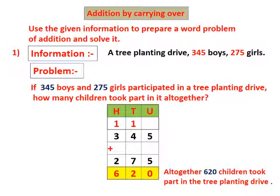Now we add the tens: 4 tens plus 7 tens plus 1 ten carried over is equal to 12 tens. 12 tens means 1 hundred and 2 tens. So we write 2 in the tens place in the sum. Then we write the carried over 1 above the hundreds column.